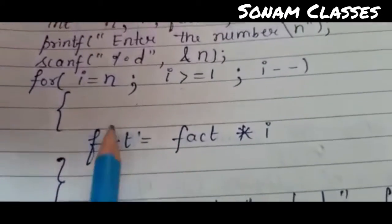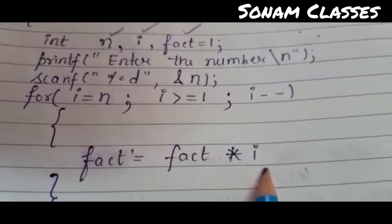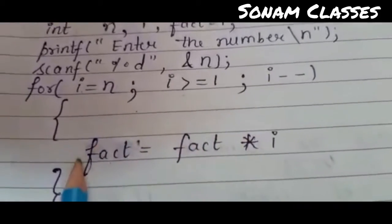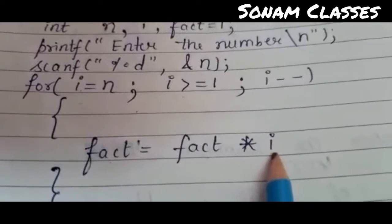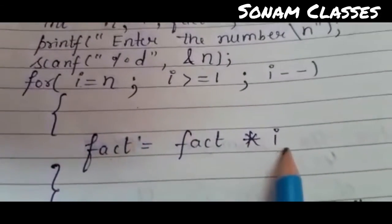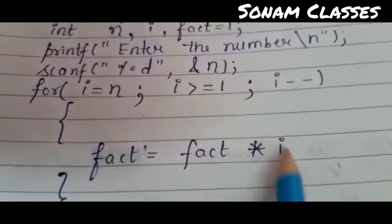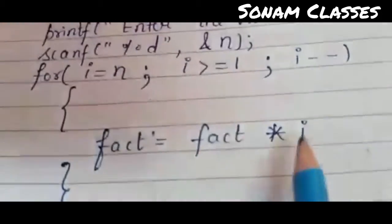In this loop, what is the formula? Factorial is equal to factorial multiply i. That means this thing in the beginning, factorial value is what, is the 1. 1 into 4, 4 went back. 4 then what is the 3, 4 into 3. Then it came back, its value is 4 into 3, what is the 2. Then it came back, its value is 4 into 3 into 2, and its value is 1, and then it goes back.